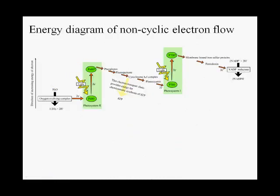Here is an energy diagram of non-cyclic electron flow, showing that light energy is used to boost electrons to higher energy states. Then we have the electron transport chain decreasing in energy, and that is used to indirectly power ATP synthesis by generating a proton gradient. When electrons arrive at photosystem 1, light boosts them to an even higher energy level, which is enough to reduce NADP+ to NADPH.